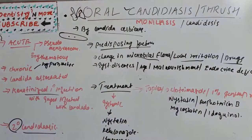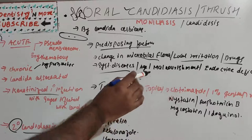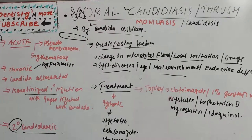Drug therapy can also lead to infection — corticosteroids, cytotoxic drugs, or other immunosuppressive drugs — as well as radiation therapy and systemic diseases like leukemia, lymphoma, diabetes, tuberculosis, and epithelial dysplasia. Malnourishment is also a predisposing factor because of low vitamin A, low iron, or low pyridoxine levels. Vulnerable age groups such as infancy, old age, and pregnancy are also predisposing factors.